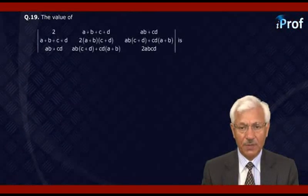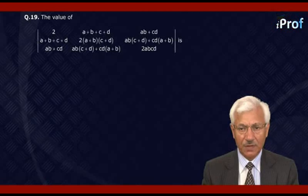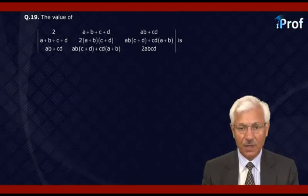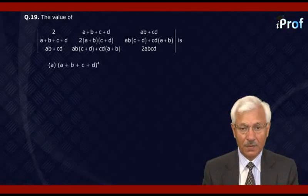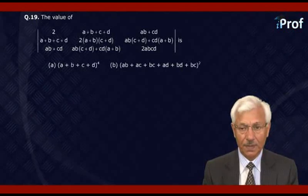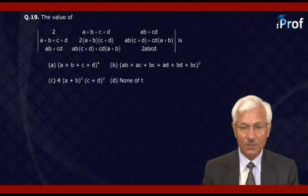That is 130, which is option C. Now the second problem: find the value of the determinant with first row 2(A+B+C+D), AB+CD; second row A+B+C+D, 2(A+B)(C+D), AB(C+D)+CD(A+B); and third row AB+CD, AB(C+D)+CD(A+B), 2ABCD. Options: (A+B+C+D)⁴; (AB+AC+BC+AD+BD+BC)²; 4(A+B)²(C+D)²; or none of these.